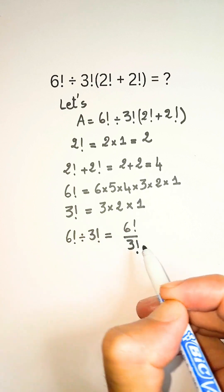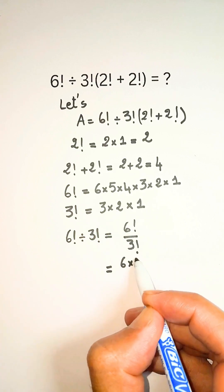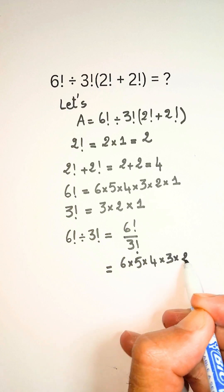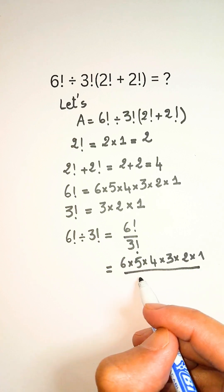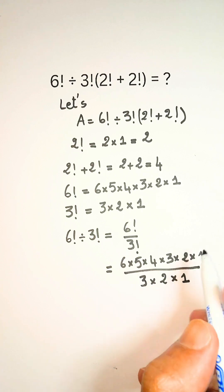Here the common terms 3 times 2 times 1 cancel out leaving 6 times 5 times 4.